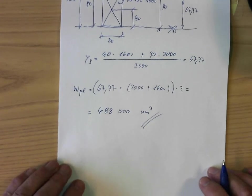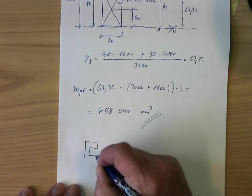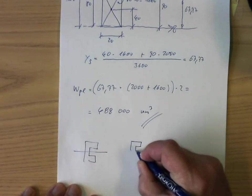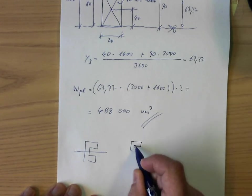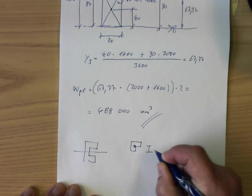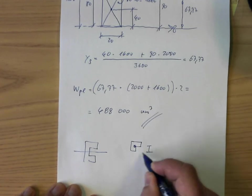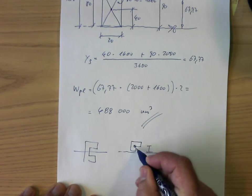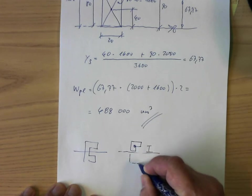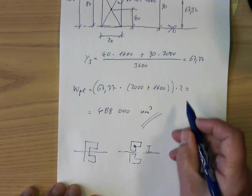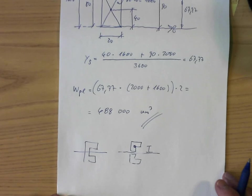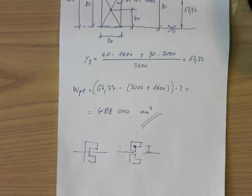To summarize: first, we divided our profile into two parts which have the same area. Then we calculated the center of gravity of the upper part. Then we calculated the distance from the axis of interest to this center of gravity times the area, and we have the same on the other side — so we have it two times. The plastic modulus of this object is 488,000 mm³. Thank you.